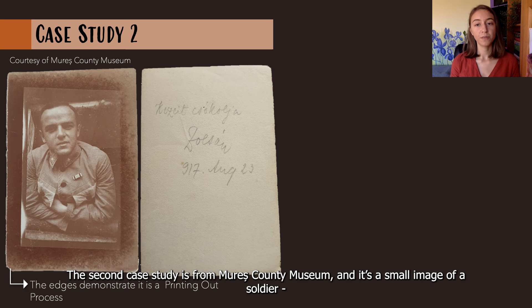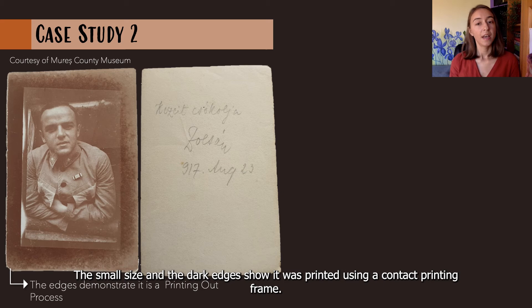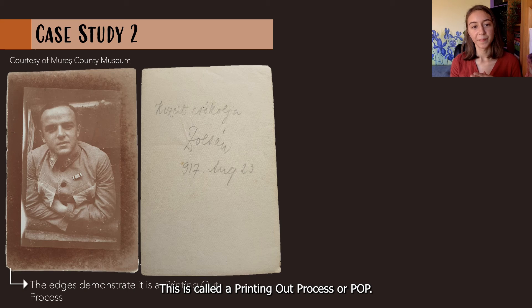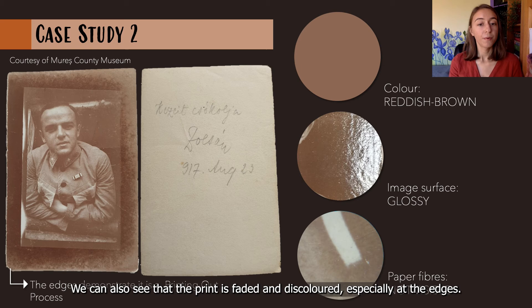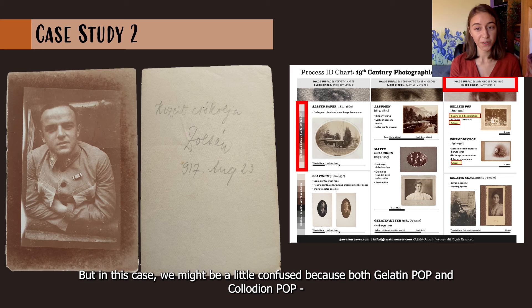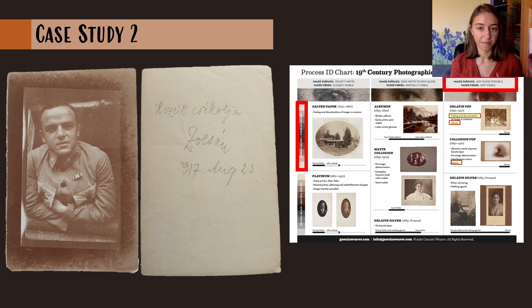The second case study is from Mureș County Museum and it's a small image of a soldier from the First World War — as the year written on the back says, 1917. The small size and the dark edges show it was printed using a contact printing frame, meaning the negative was in contact with the paper and exposed to sunlight. This is called a printing-out process, or POP. Other features we can observe are the reddish-brown color, the glossy surface, and the fact that the paper fibers aren't visible. We can also see that the print is faded and discolored, especially at the edges. In this case we might be a little confused because both Gelatin POP and Collodion POP appear similar regarding their color, surface, and non-visible paper fibers.